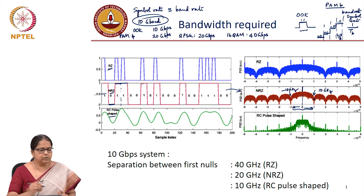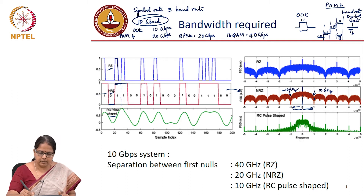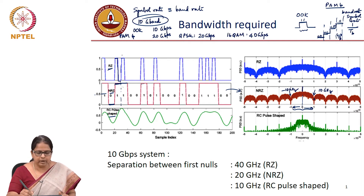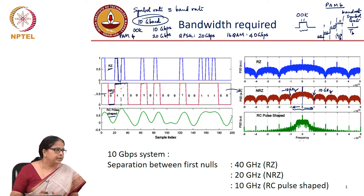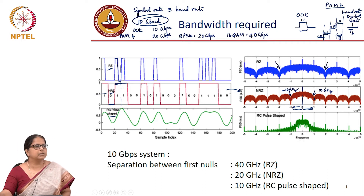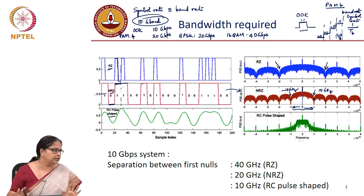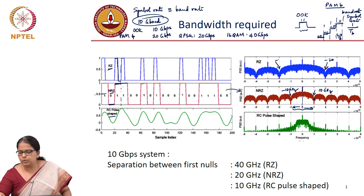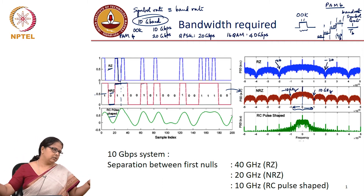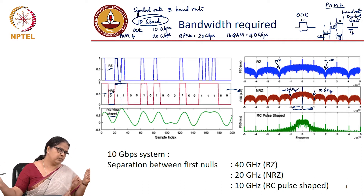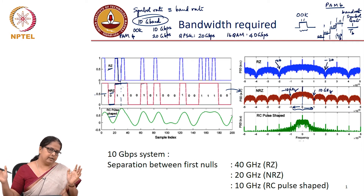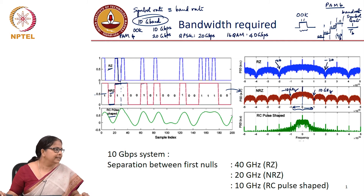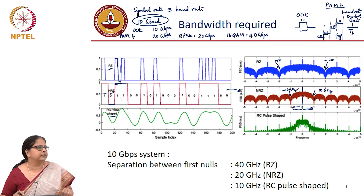Now if you do the same thing for return-to-zero, during every bit slot the symbol goes back to 0. More transitions are happening, which means more bandwidth is required. Looking at the location of the null — it goes from minus 20 to plus 20. So the separation between the nulls increased to 40 GHz, meaning the occupied spectrum actually increased. This is why the bandwidth required for an RZ system is double that of a non-return-to-zero system.